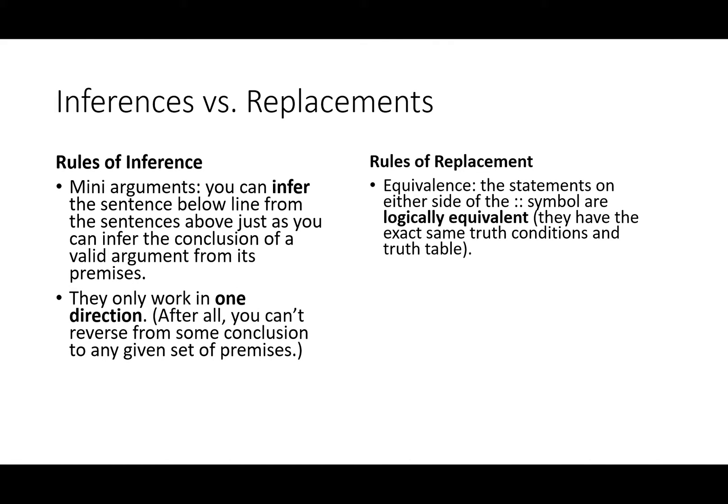Rules of inference work only in one direction. After all, you can't reverse from some conclusion to any given set of premises. Rules of replacement work in both directions. They're known to be true or false under all and only the same conditions.